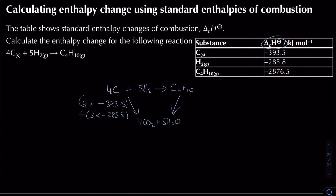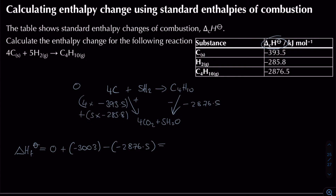For the products side there's just minus 2876.5. The enthalpy change of formation equals zero, plus minus 3003 (going along the arrow), minus minus 2876.5 (going against the arrow). The result is minus 126.5 kJ/mol.